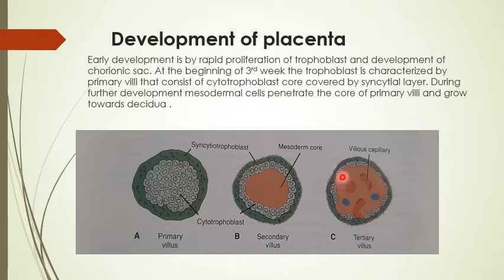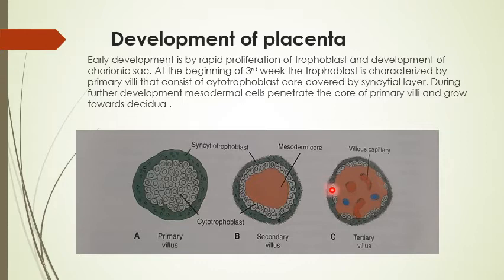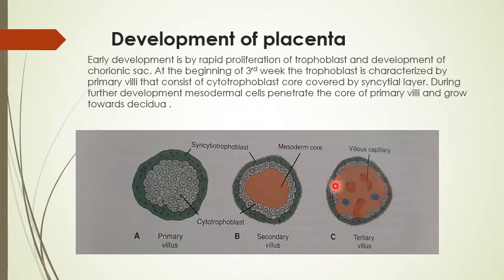The rest of the extraembryonic mesoderm forms the connective tissue of the villus around the blood vessels. So a villus is composed of four barriers: endothelial lining of blood vessels, connective tissue derived from extraembryonic mesoderm, cytotrophoblast, and syncytiotrophoblast. These are four barriers between the maternal blood (present around the villi) and the fetal blood present in the capillaries.